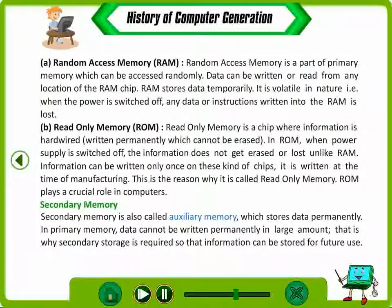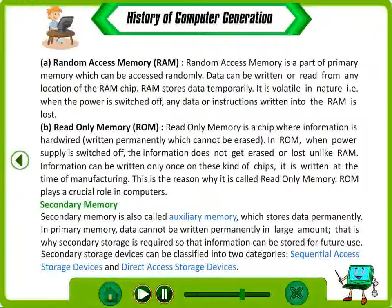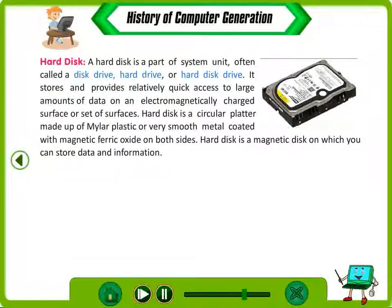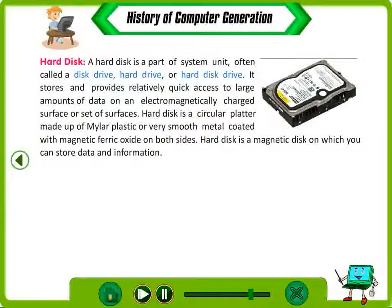Secondary memory is also called auxiliary memory and stores data permanently. In primary memory, data cannot be written permanently in large amounts, which is why secondary storage is required so that information can be stored for future use. Secondary storage devices can be classified into sequential access storage devices and direct access storage devices. A hard disk is a part of the system unit, often called a disk drive, hard drive, or hard disk drive. It stores and provides relatively quick access to large amounts of data on an electromagnetically charged surface.